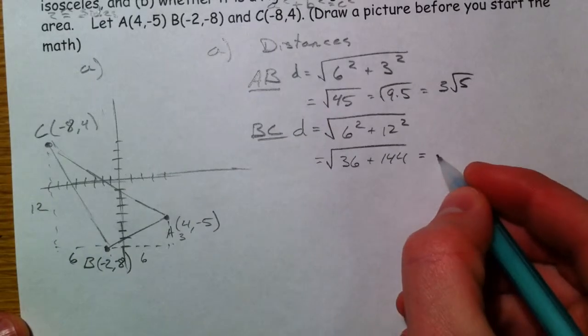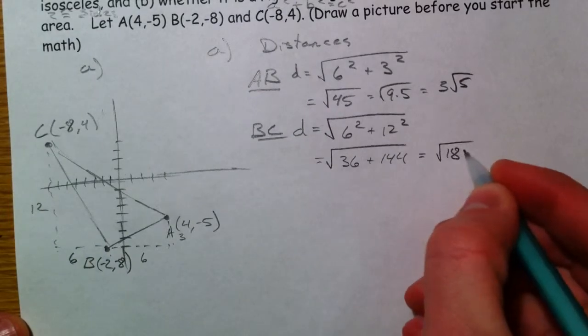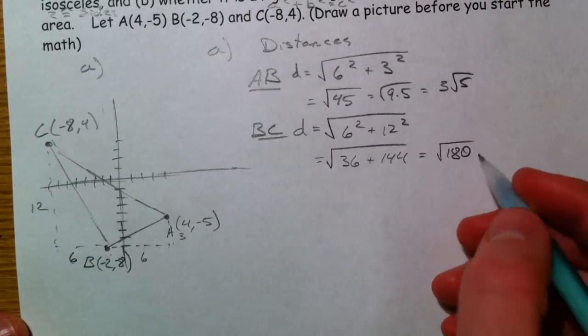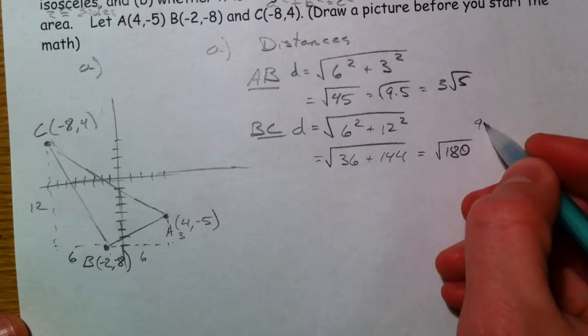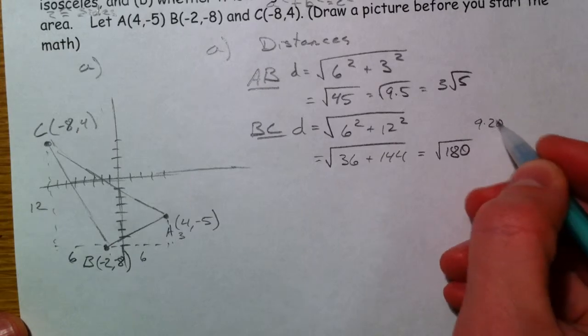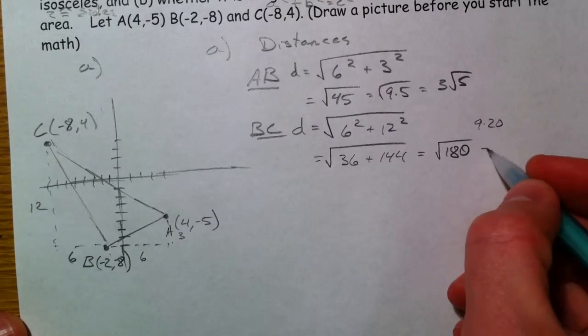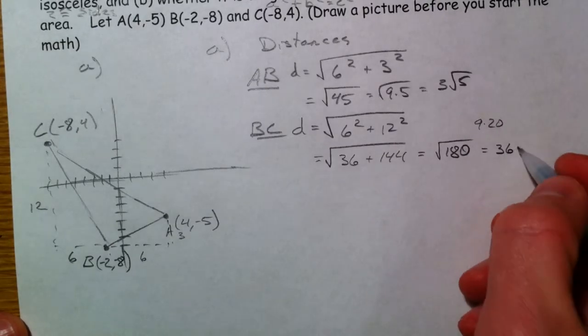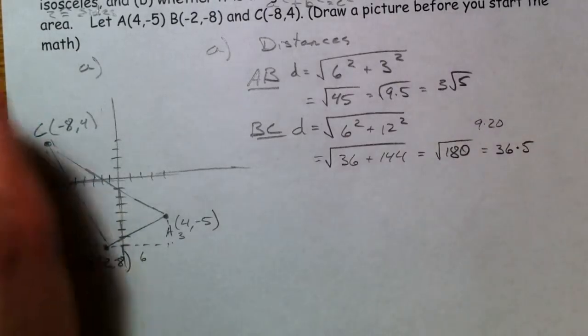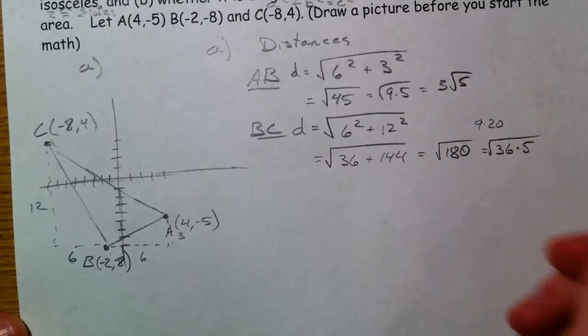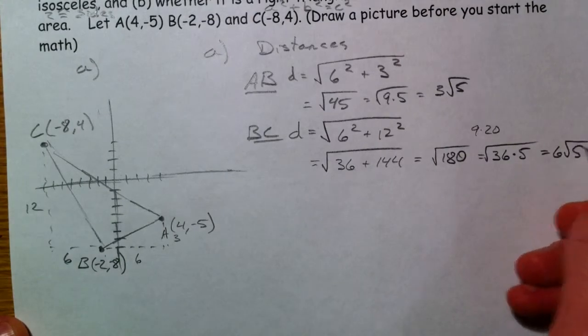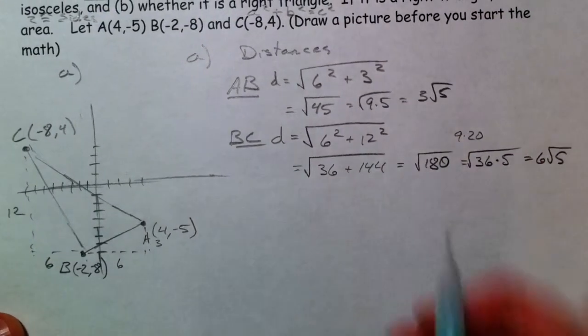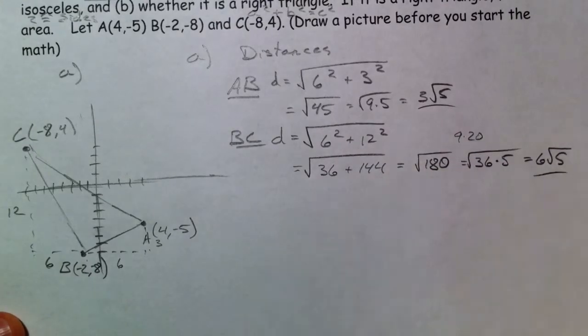That's 180. Square root of 180. I know there's a 9 in there, 9 times 20. But then there's another 4 within there, so there's a 36 in there. 36 times 5. And so that's 6 root 5. So we've got 3 root 5 and 6 root 5.